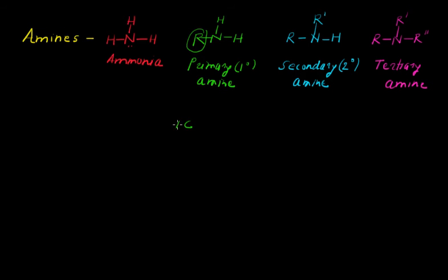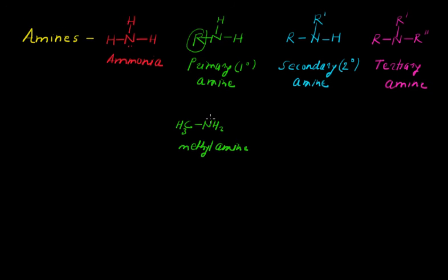For example, CH3NH2 is methylamine — one hydrogen is replaced by the methyl alkyl group, which is why the name becomes methylamine, and it belongs to primary amines. We can also take the example of a primary amine by replacing one hydrogen with an aryl group, giving us phenylamine, which can be written as aniline.